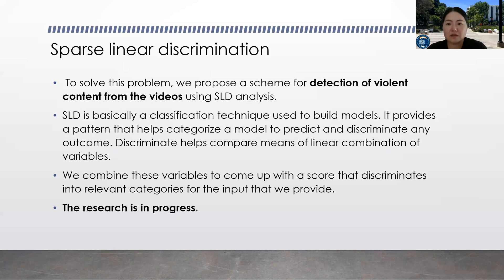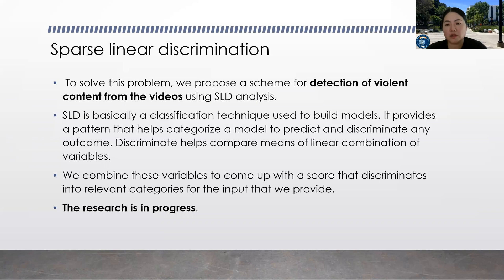In order to detect this sparse, violent, and inappropriate content from those videos, we propose to use SLD – Sparse Linear Discrimination. This method is used to detect sparse inappropriate content from a large amount of video data. SLD is basically a classification technique used to build models and extract features out of a sparse sample space, especially targeting very tiny features within that sparse sample space.